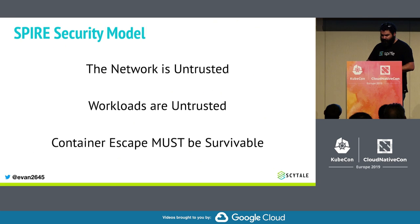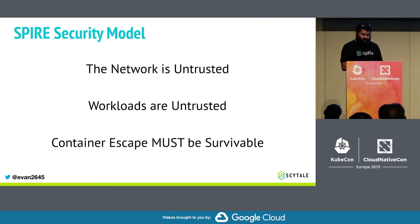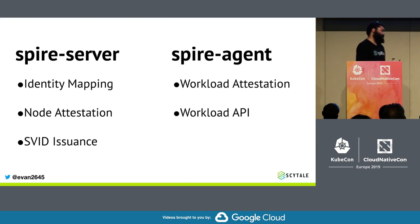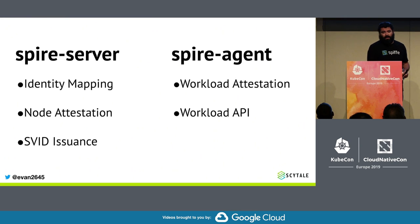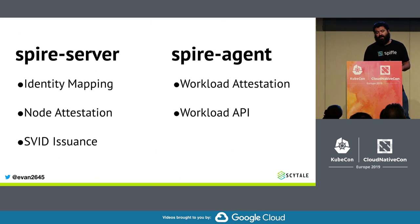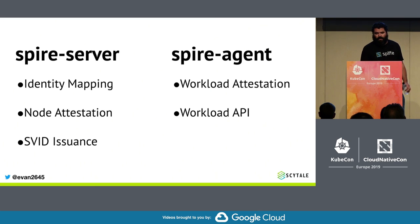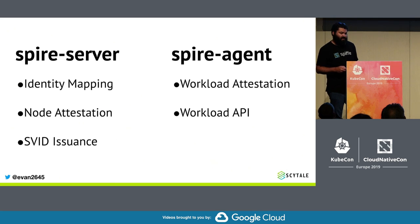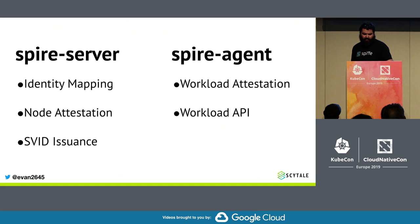With that out of the way, let's look at the SPIRE architecture. SPIRE comprises two major components: a server and an agent. The SPIRE server is responsible for identity mapping — what SPIFFE ID should be given to whom and when — and also for node attestation, and SVID issuance, so creating, minting, and issuing certificates. The SPIRE agent, on the other hand, is responsible for workload attestation, which is similar to node attestation but for workloads, and it's ultimately responsible for turning on the Workload API.